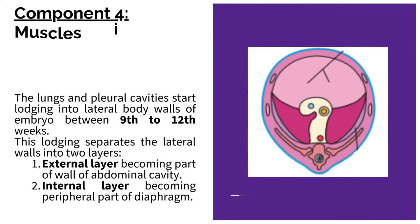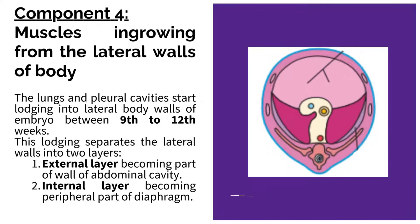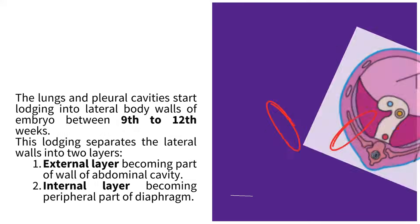Component 4: Muscles growing from the lateral walls of the body. The lungs and pleural cavities start lodging into the lateral body walls of the embryo between the 9th and 12th weeks. This lodging separates the lateral walls into two layers: the external layer, becoming part of the wall of the abdominal cavity, and the internal layer, becoming the peripheral part of the diaphragm.